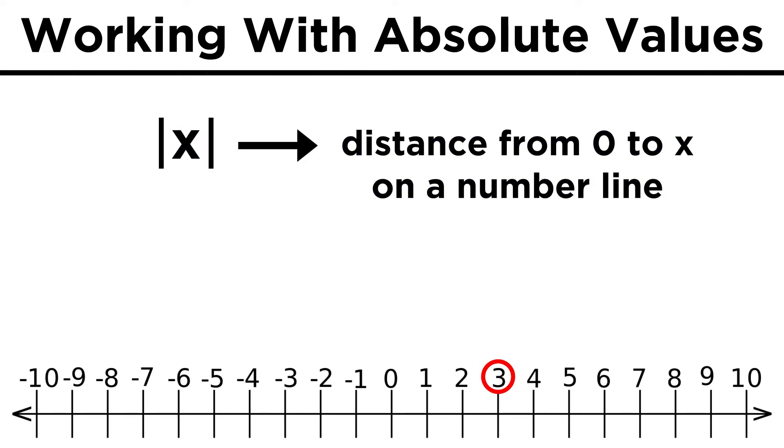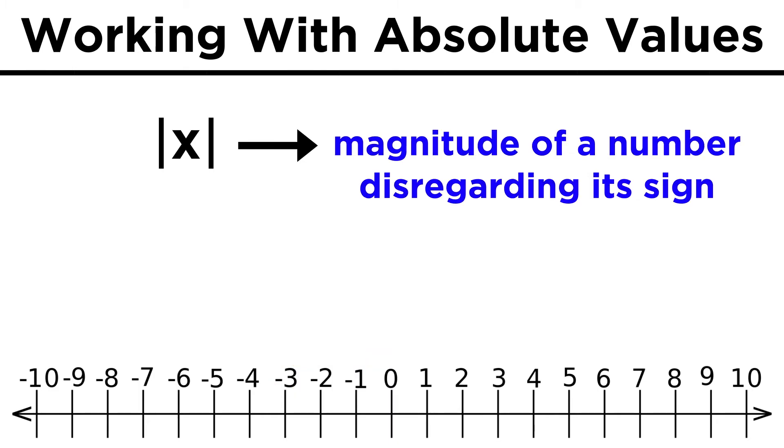Take the number three. This is three units away from zero, so the absolute value of three is three. Now look at negative three. This is also three units away from zero, so the absolute value of negative three is three.